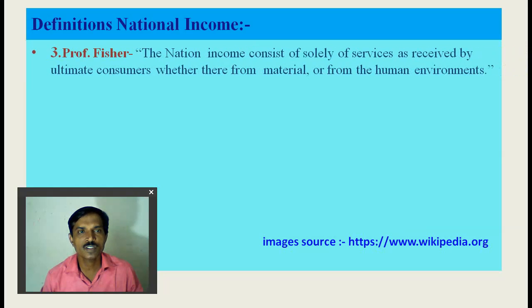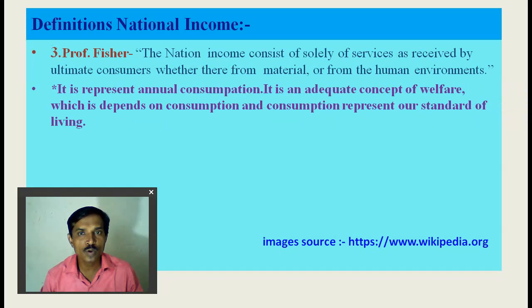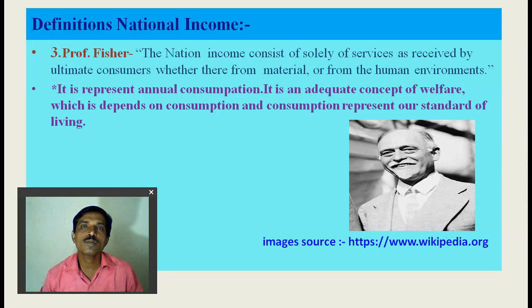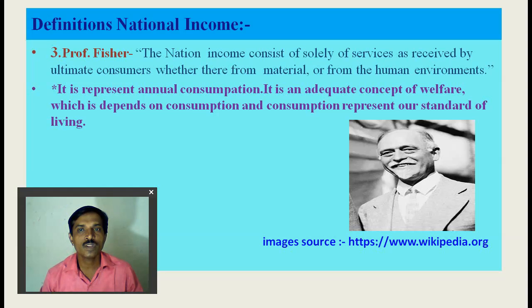Our next definition is Prof. Fisher's definition. According to Fisher, national income consists solely of services as received by ultimate consumers, whether from material or from the human environment. National income consists only of those services received by the final consumer, whether from the material or human environment. Fisher's definition represents annual consumption, and it is an adequate concept of welfare which depends on consumption, and consumption represents our standard of living. Fisher's definition represents national income from the consumption point of view.